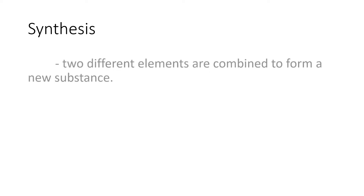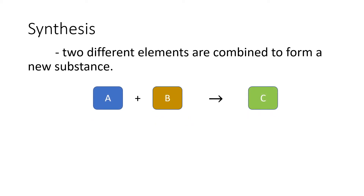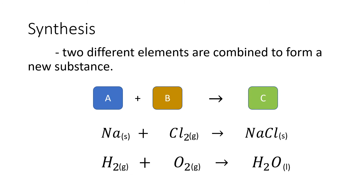Synthesis reaction, also known as combination, is a chemical reaction where two different elements are combined to form a new substance. For example, element A plus element B forms a new substance called substance C. Examples include the combination of sodium and chlorine forming sodium chloride, as well as the combination of hydrogen and oxygen forming water.